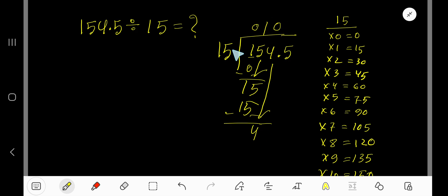Zero times, as 4 is less than 15, so 0 times 15 gives you 0. Subtract, you are getting 4. Now bring down this 5, but before this 5 there's a decimal.